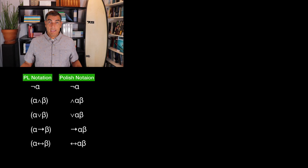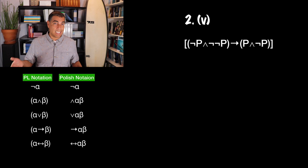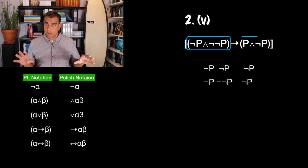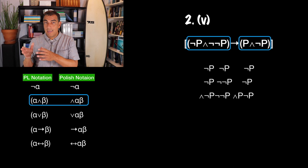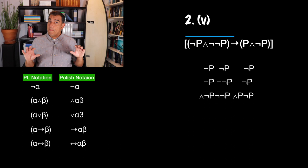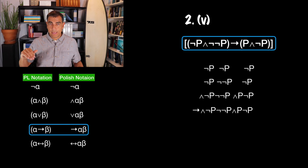Five is filthy. The nots are involved directly in the basic propositions — those are easy, just not P and not not P wherever needed. Then it looks like we have two inner parentheses, both of which are conjunctions. The first is and not P not not P. The second is and P not P. Both of those are used in a conditional. So I write arrow and not P not not P, then and P not P.